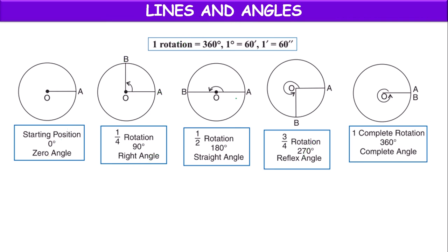If the ray has completed half rotation, that is half of 360 degrees equals 180 degrees. The angle is formed on a straight line, so this 180-degree angle is called a straight angle.